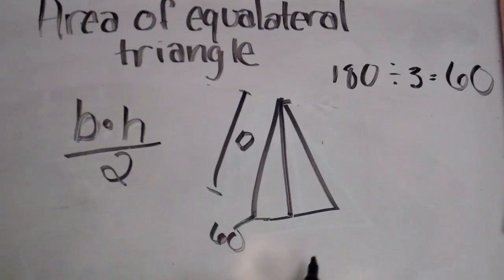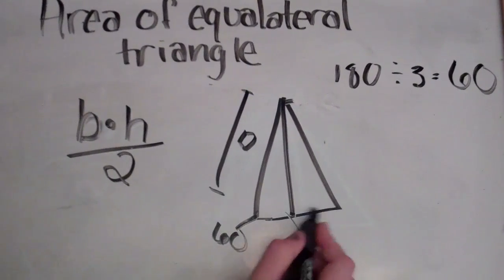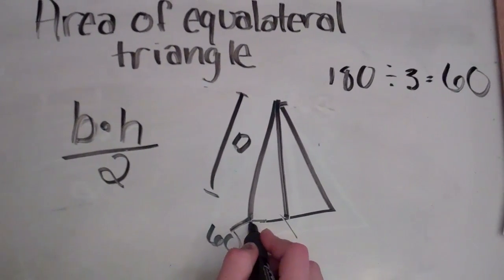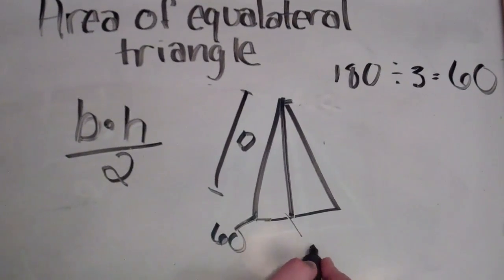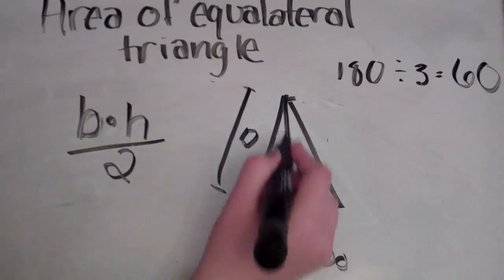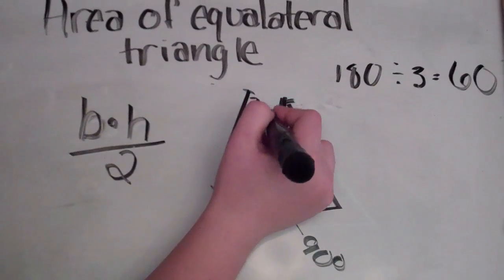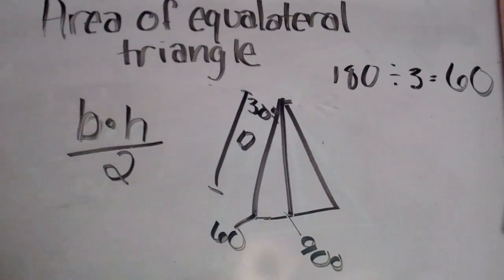This angle stays 60 degrees. This angle, since a straight line equals 180 degrees, half of 180 is 90 degrees. And since this 60 degree angle was cut in half, it now becomes a 30 degree angle.